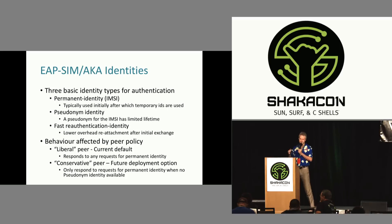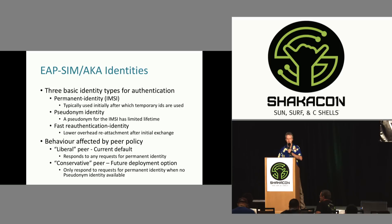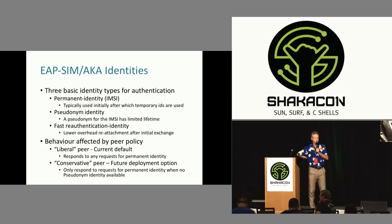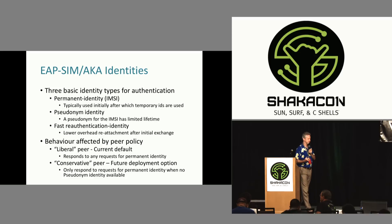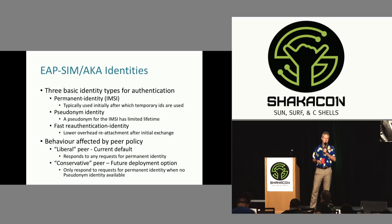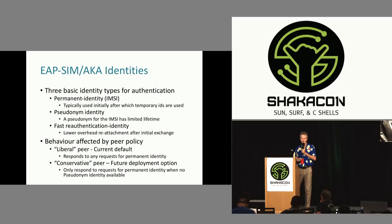Going into how this stuff works: there are two modes — liberal peer and conservative peer. Liberal peer is the current default. When the phone first connects, it uses the full IMSI. And then in liberal mode, if an access point says let's do full authentication, the phone just says okay. So it's basically: give me your IMSI — and the phone just says okay. That's liberal mode, that's the current default. Conservative peer mode is a future deployment option that only responds with the permanent identity — the IMSI — when there's no pseudonym available, but you have to introduce the distribution infrastructure for the pseudonyms.